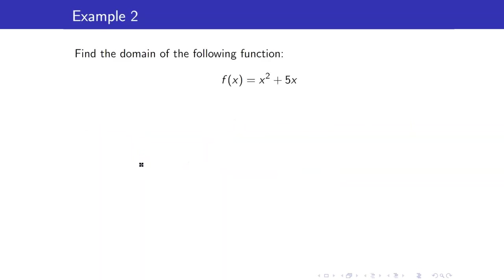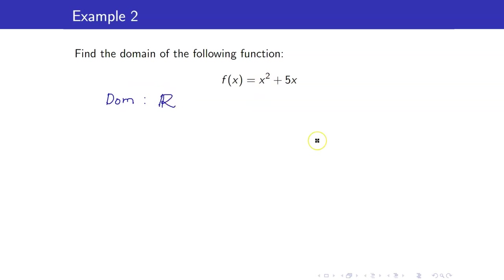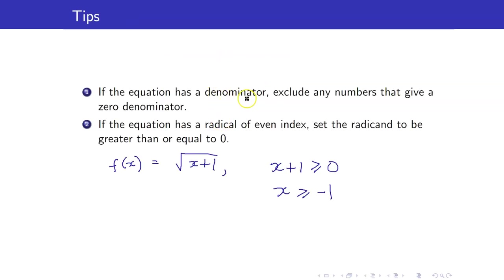For example, find the domain of f of x equals x squared plus 5x. Take note that we can put any number for x, so the domain here is just the set of all real numbers. We don't have any restrictions. Remember that restrictions only apply if you have denominators or radicals of even index.